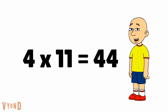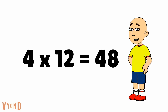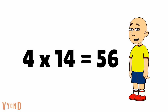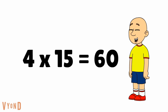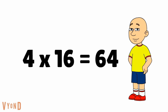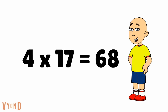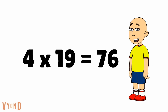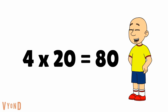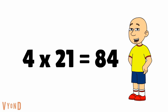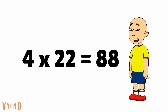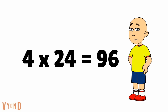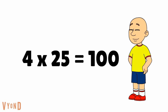4 times 11 equals 44, 4 times 12 equals 48, 4 times 13 equals 52, 4 times 14 equals 56, 4 times 15 equals 60, 4 times 16 equals 64, 4 times 17 equals 68, 4 times 18 equals 72, 4 times 19 equals 76, 4 times 20 equals 80, 4 times 21 equals 84, 4 times 22 equals 88, 4 times 23 equals 92, 4 times 24 equals 96, and 4 times 25 equals 100.